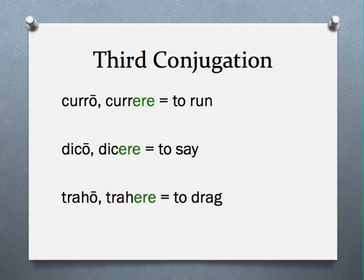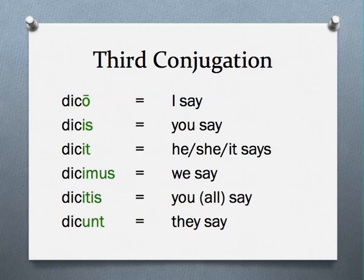Third conjugation verbs have an infinitive that ends in a short -ERE. Currere, dicere, and trahere are all third conjugation verbs. These verbs are conjugated in the following way: O, IS, IT, IMUS, ITIS, UNT. Note how the first person singular O is the only long vowel in this conjugation. Also note that the third person plural is UNT.